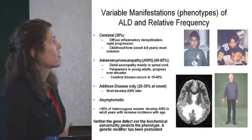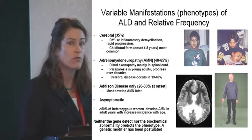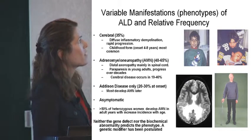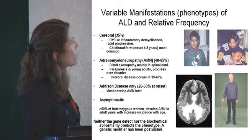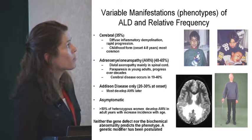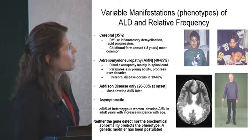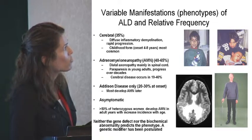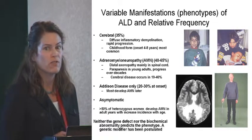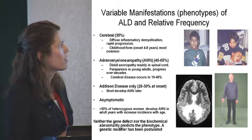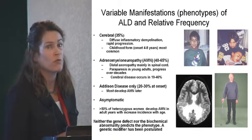The classic view of ALD is that there's a cerebral form, which is about 35% of individuals. This form is much more diffuse, inflammatory, and very rapidly progressing. I'm showing here an example of a boy who was diagnosed with the cerebral form, and one year later is very, very different — so it progresses very quickly. Its onset is somewhere between four and eight years.